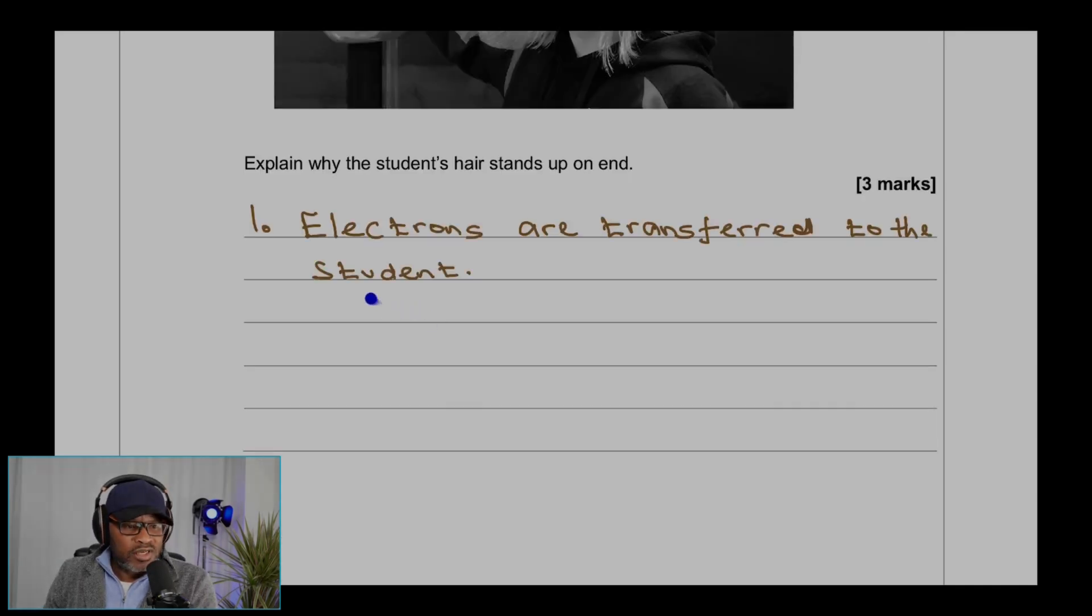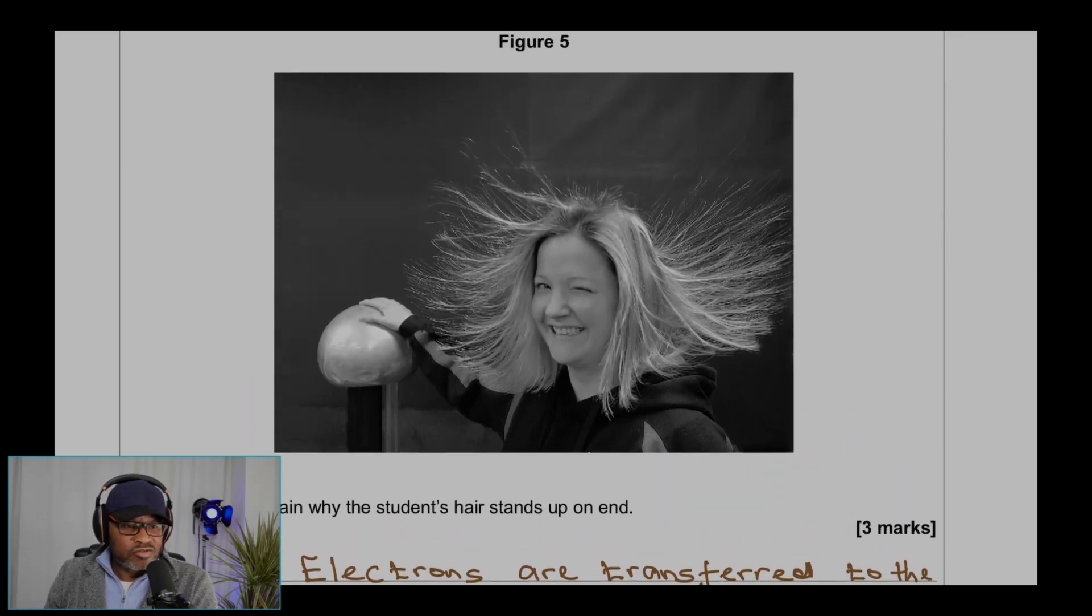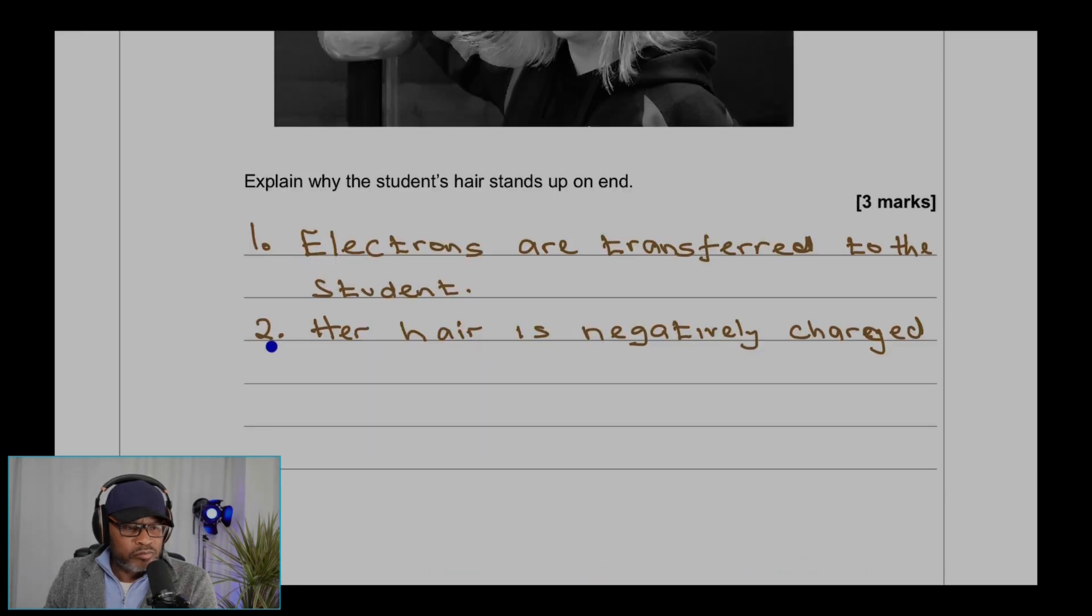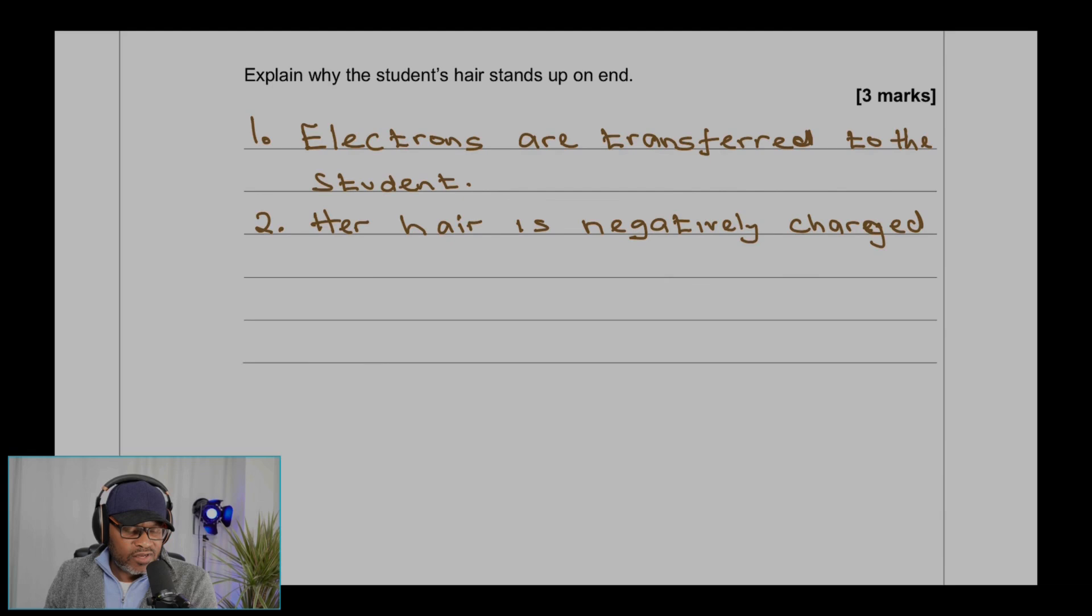First point: electrons are transferred to the student from the metal dome. Point number two: the hair is negatively charged because electrons have negative charge.